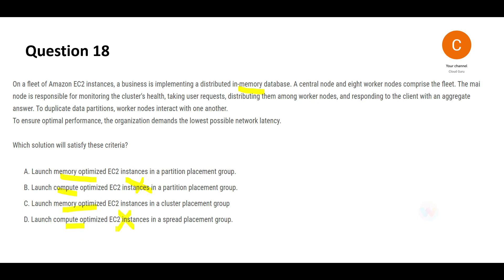Now we have to choose between A and C. So what is the difference? One uses cluster placement group, the other uses partition placement group. If you see this question, there are various components. There is a central node, there are eight worker nodes, and everything needs to be going in a package. If you want to package everything, it's always better to put cluster placement groups. This is my answer.